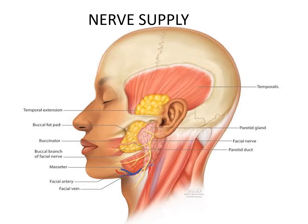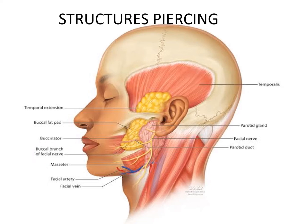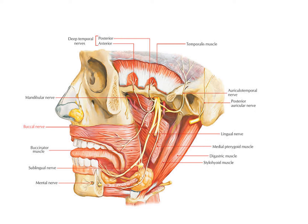The buccinator is supplied by the buccal branch of the facial nerve. Regarding structures which pierce this muscle, one is the parotid duct coming from the parotid gland. The parotid duct pierces the buccinator muscle to open into the oral cavity.